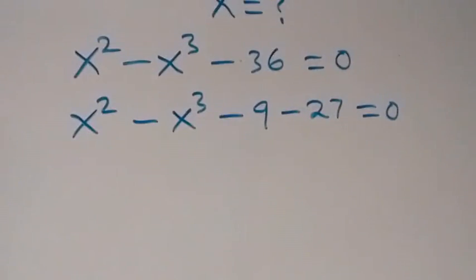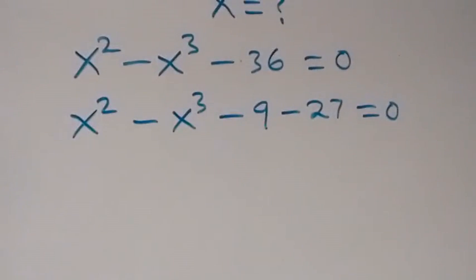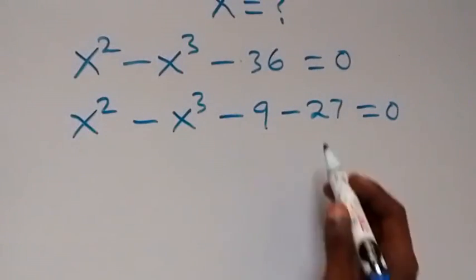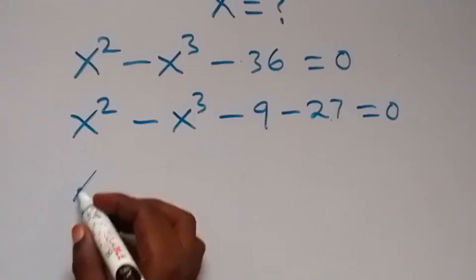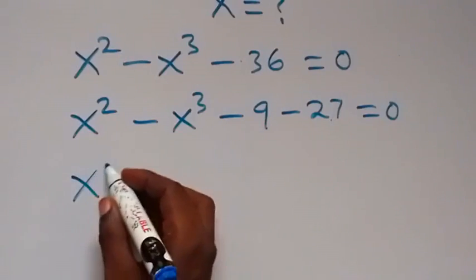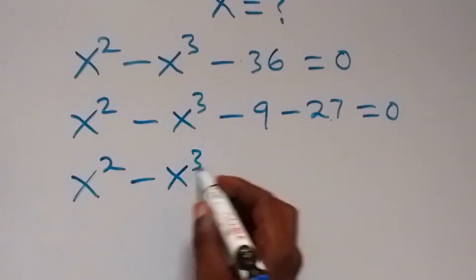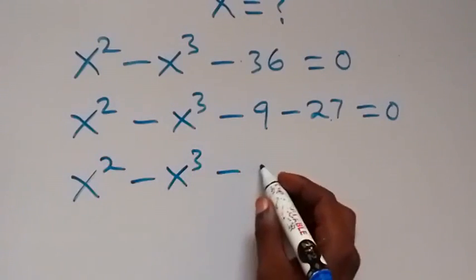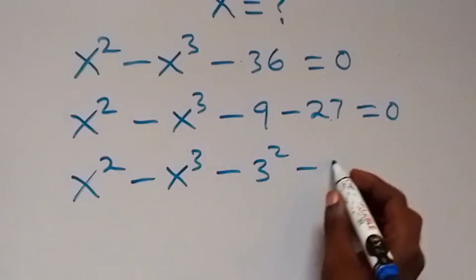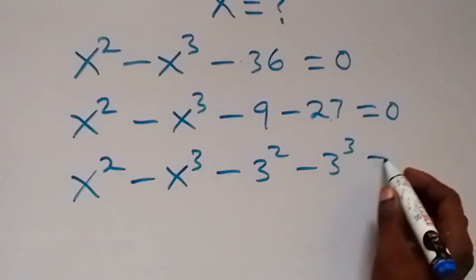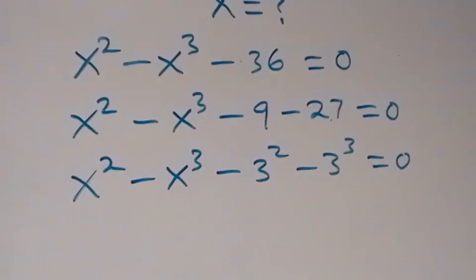From here, we can write 9 as 3 squared and 27 as 3 cubed, and this will be x squared minus x cubed minus 3 squared minus 3 cubed equals 0.